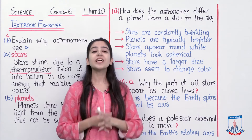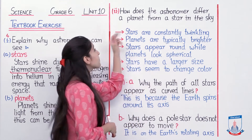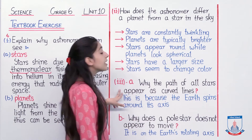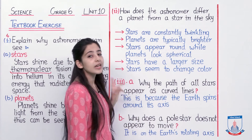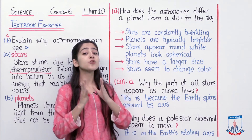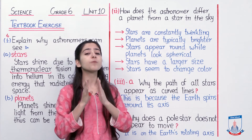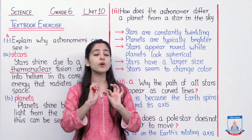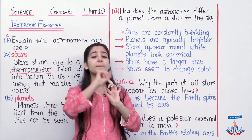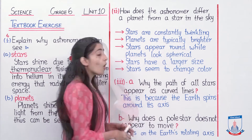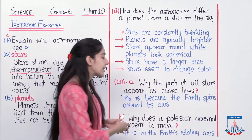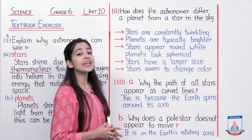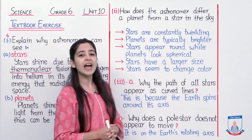Well done students, now we are done with the second part of question number 4, and we are moving towards the third part. Ab jab aap third question dekhenge, toh aapki textbook mein ek picture bani hui hai, jahaan par stars bane hue hain aur ek woh curved shape bana rahe hain, aur humse puchhe gaye hain do sawaal — part A and part B. Toh dekhte hain ki yeh sawaal kya hain.